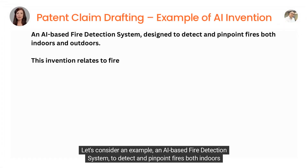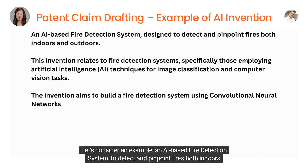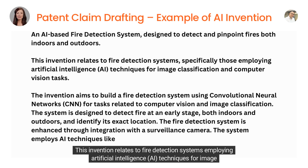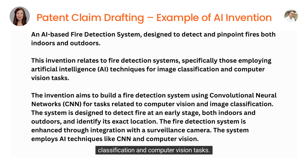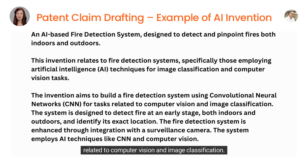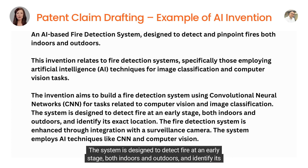Let's consider an example: an AI-based fire detection system to detect and pinpoint fires both indoors and outdoors. This invention relates to fire detection systems employing artificial intelligence (AI) techniques for image classification and computer vision tasks. The invention aims to build a fire detection system using convolutional neural networks (CNN) for tasks related to computer vision and image classification. The system is designed to detect fire at an early stage, both indoors and outdoors, and identify its exact location.